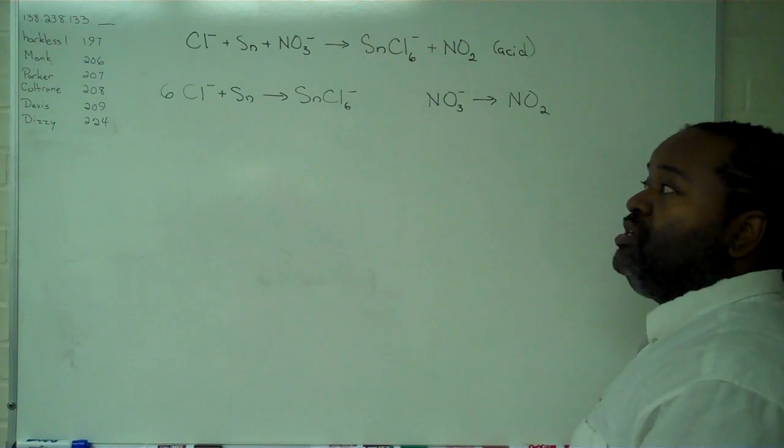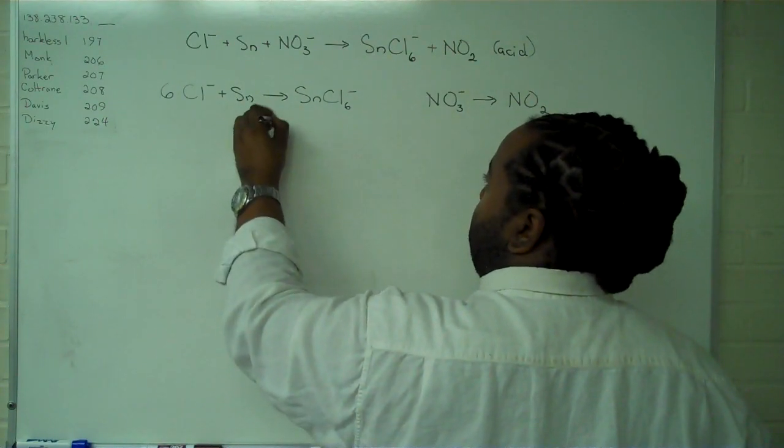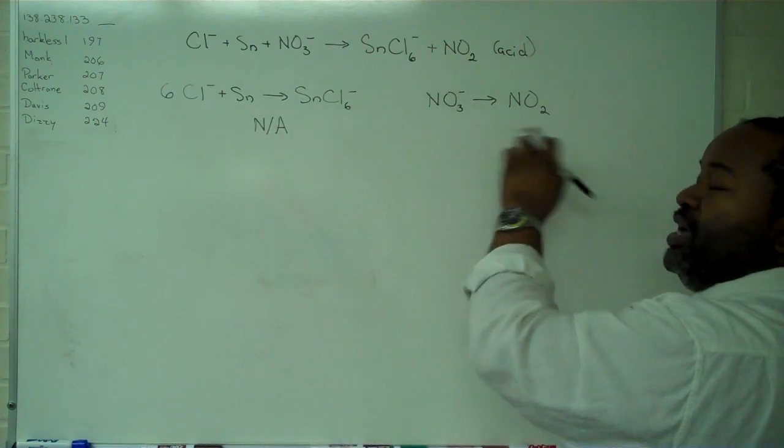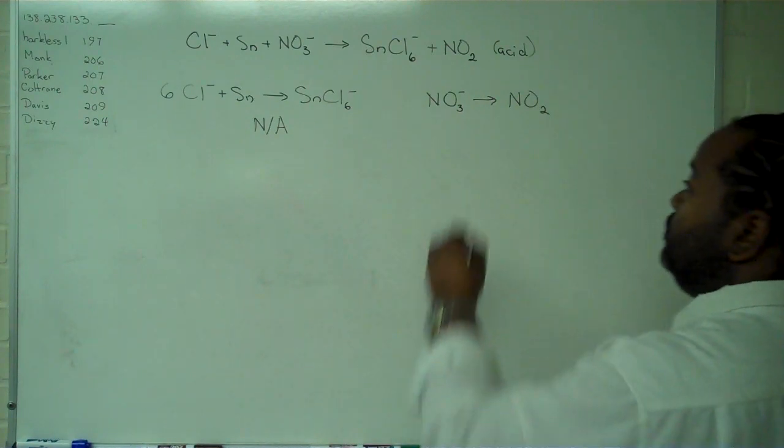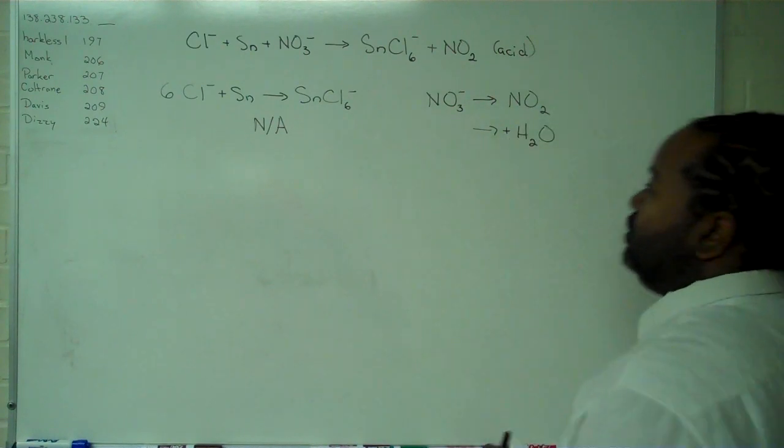Now, the next step is to balance our oxygens. We have none, so we do not have to do anything here. Over here, we have three oxygens as reactant and two as product. We balance by adding in water. So this will require one water molecule.